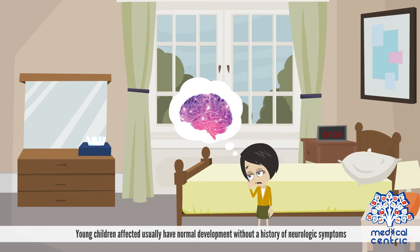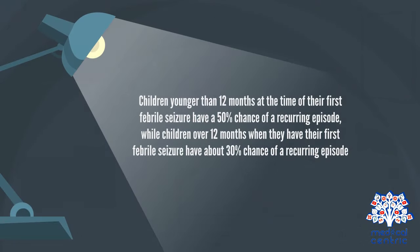Young children affected usually have normal development without a history of neurologic symptoms. Children younger than 12 months at the time of their first febrile seizure have a 50% chance of a recurring episode, while children over 12 months when they have had their first febrile seizure have about a 30% chance of a recurring episode.